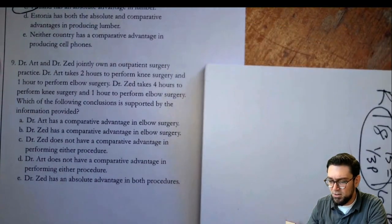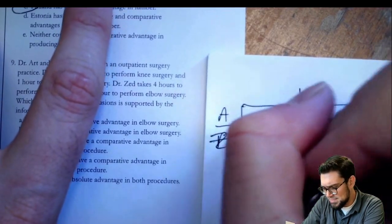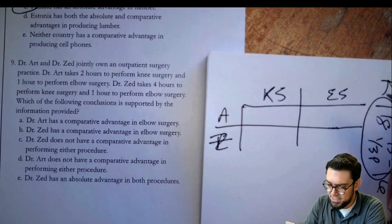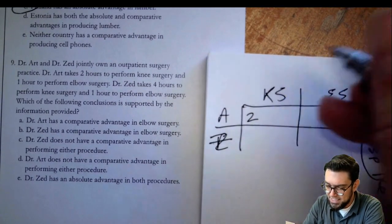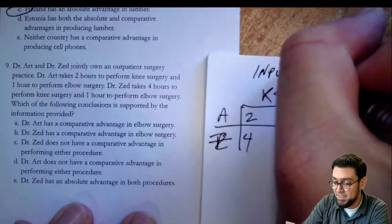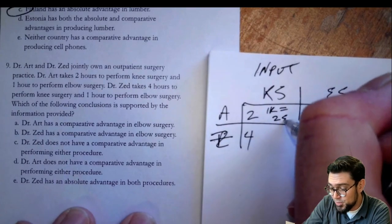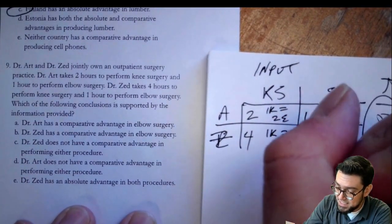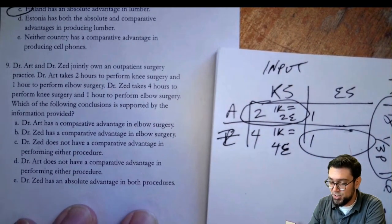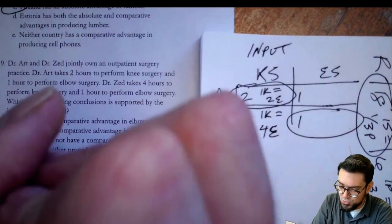Last but not least: Art and Zed are doctors who perform surgeries — knee surgery and elbow surgery. Art takes two hours to do knees and one hour to do an elbow. Zed takes four hours to do knees and one hour to do an elbow. This is an input problem — flip the order. One knee for Dr. Art equals two elbows. One knee for Dr. Zed equals four elbows. So Dr. Art has comparative advantage in knees and Dr. Zed has it in elbows. Dr. Art has comparative advantage in knees, Dr. Zed has it in elbows — the answer is B.